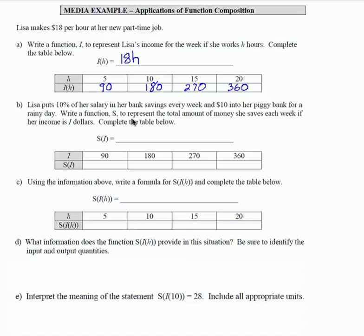Let's look at Part B. Lisa puts 10% of her salary in her bank savings every week and $10 into her piggy bank. Write a function S to represent the total amount of money she saves each week if her income is I dollars. So what we're assuming here is that her income and her salary, that really means the same thing.